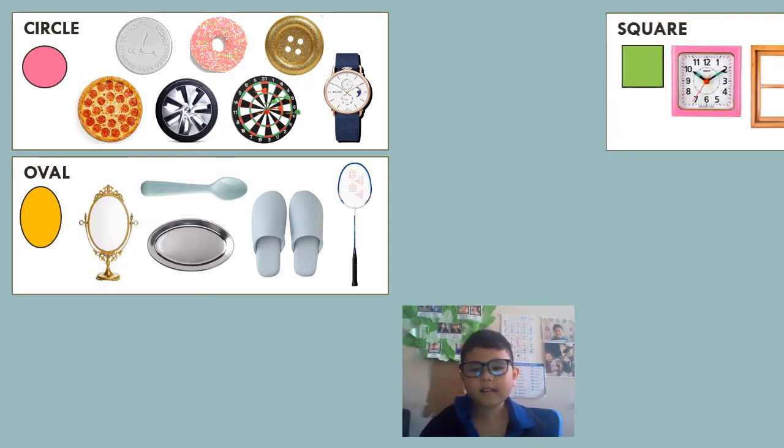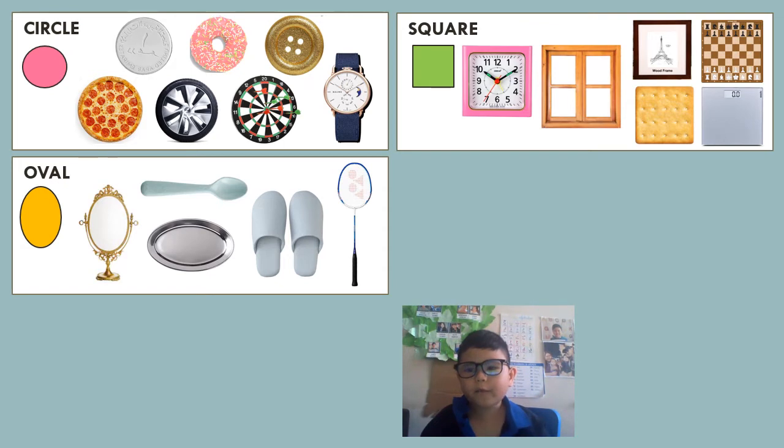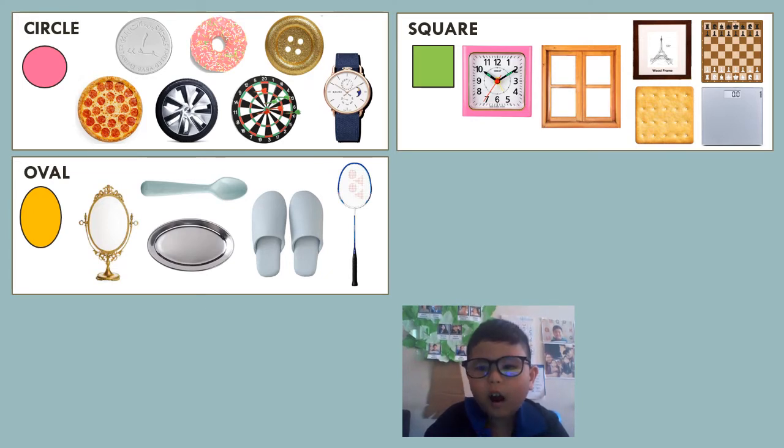Then there is the square. The square has four sides and four corners which are all equal size. We can see the square shape in some windows, photo frames, crackers, the chessboard, and the weighing scale.